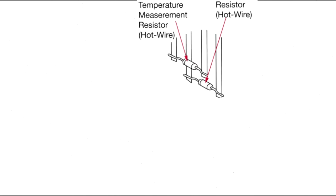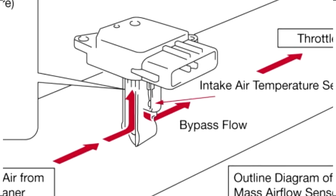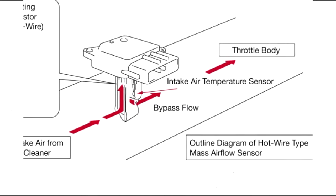Currently the most common mass airflow sensor is the plug-in hot wire type, which is located inside the intake air duct between the air filter and the throttle body.